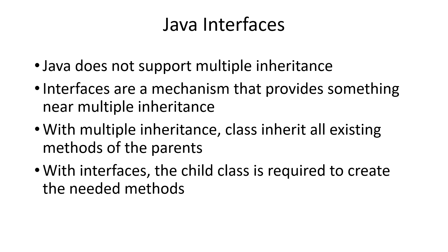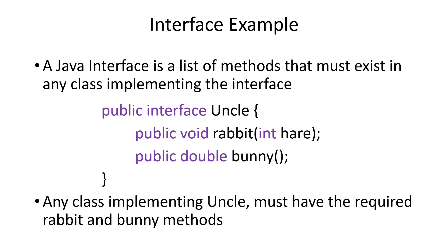Java does try to provide a feature somewhat like multiple inheritance called interfaces. An interface provides a list of methods that the class must create. This is not quite like multiple inheritance where those methods already exist defined in the parent class. Here's an example of a Java interface. It specifies that any object that implements the UNCLE interface must provide both the Rabbit and the Bunny methods, defined as shown. In the interface, the method header is given followed by a semicolon. The definition of the implementation is not shown in the interface — the implementing class must provide those definitions.